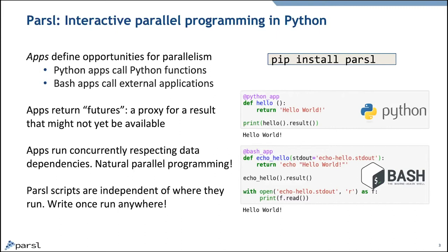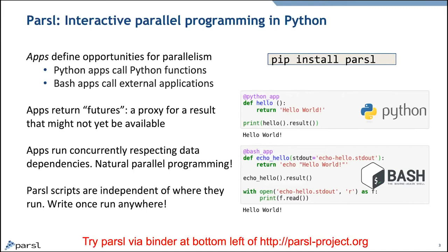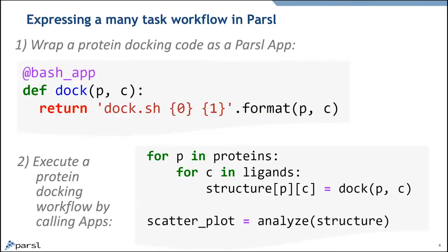This is all standard Python — pip install, everything normal, open source on GitHub, Apache 2 license, contributors welcome. You can also try this via Binder if you want to — it's available and ready to go at parcelproject.org, with a 'try parcel' link at the bottom. Most of what I'm going to show is in tutorials on there. There's one thing about multi-site execution that I'll show separately, but we can make that available if anybody's interested.